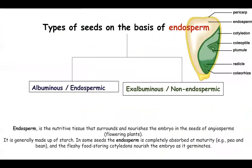If you divide seeds on the basis of their endosperm — the nutritive tissue which provides nourishment for the growing embryo — seeds can be of two types: albuminous or endospermic, and exalbuminous or non-endospermic. Albuminous seeds are those which have an endosperm, and exalbuminous seeds are those which do not have an endosperm.